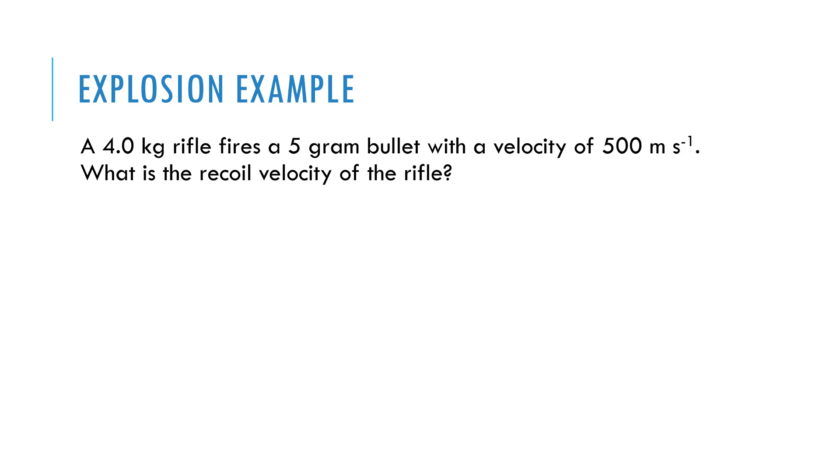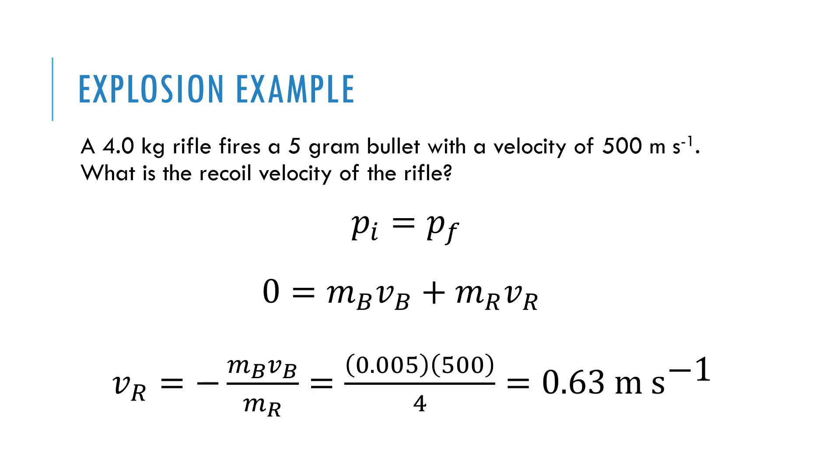So let's look at one. Recoil velocity tells me that this is an explosion problem. So I have a rifle firing a bullet of five grams with this velocity. We can find the recoil velocity of the rifle. So the initial momentum of the system is zero. Everything's at rest. And then I just have two objects afterwards, the bullet and the rifle. So I'll use B and R for those subscripts. So if I solve for this, the velocity of the rifle is negative MBVB over MR. And it should make sense that it's negative, because if the bullet moves with a positive velocity, the rifle has to move with negative velocity to recoil.